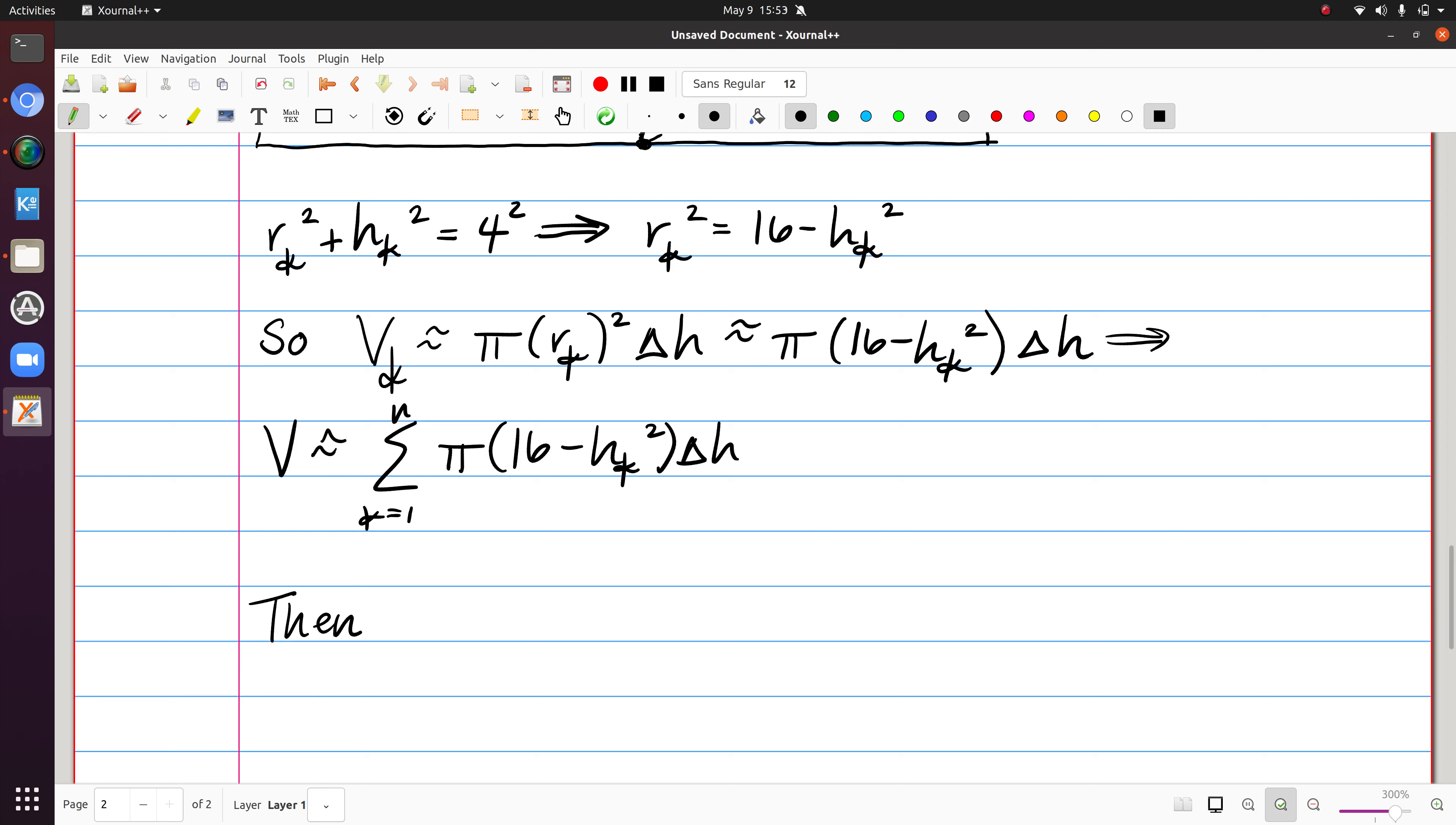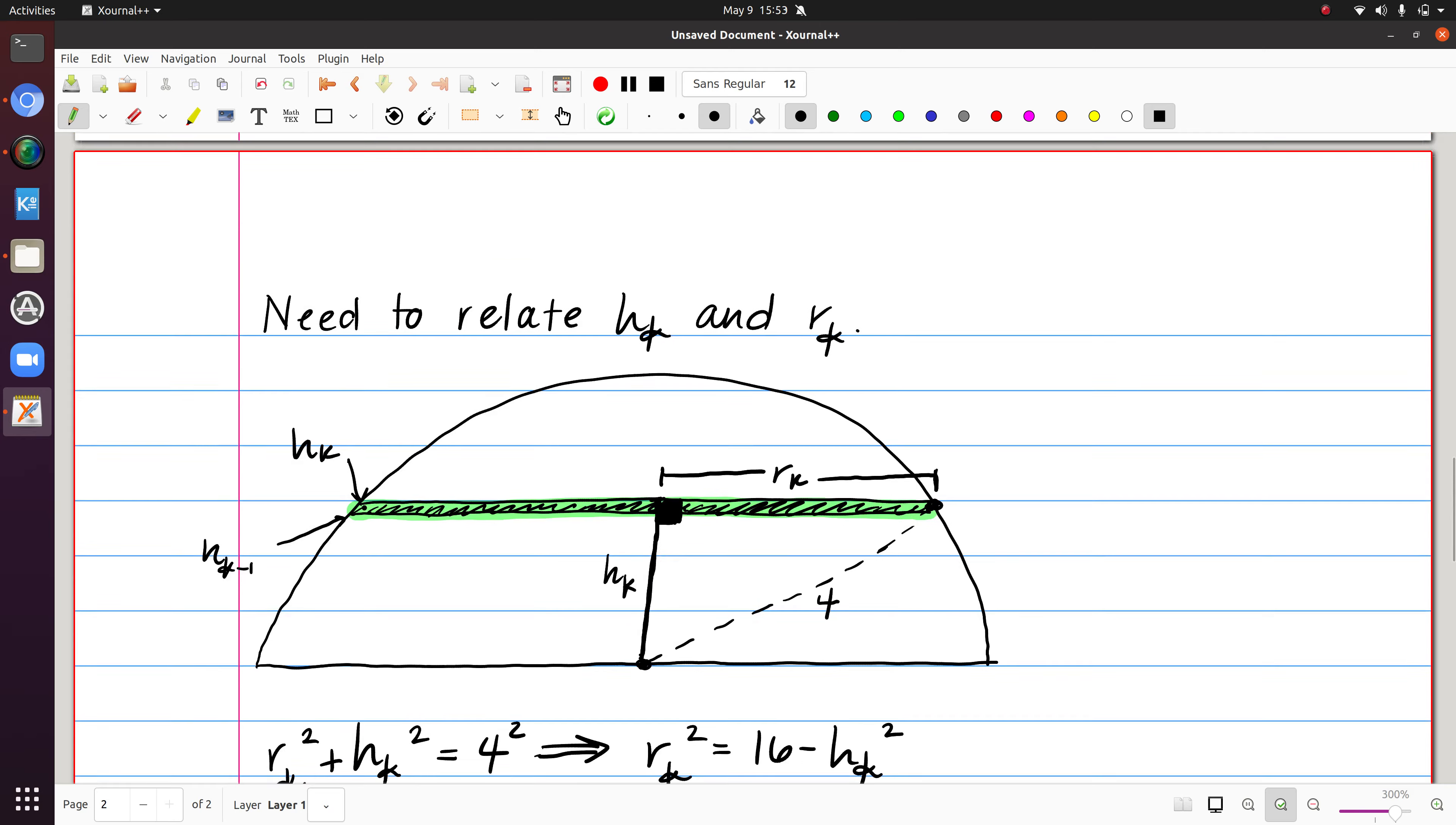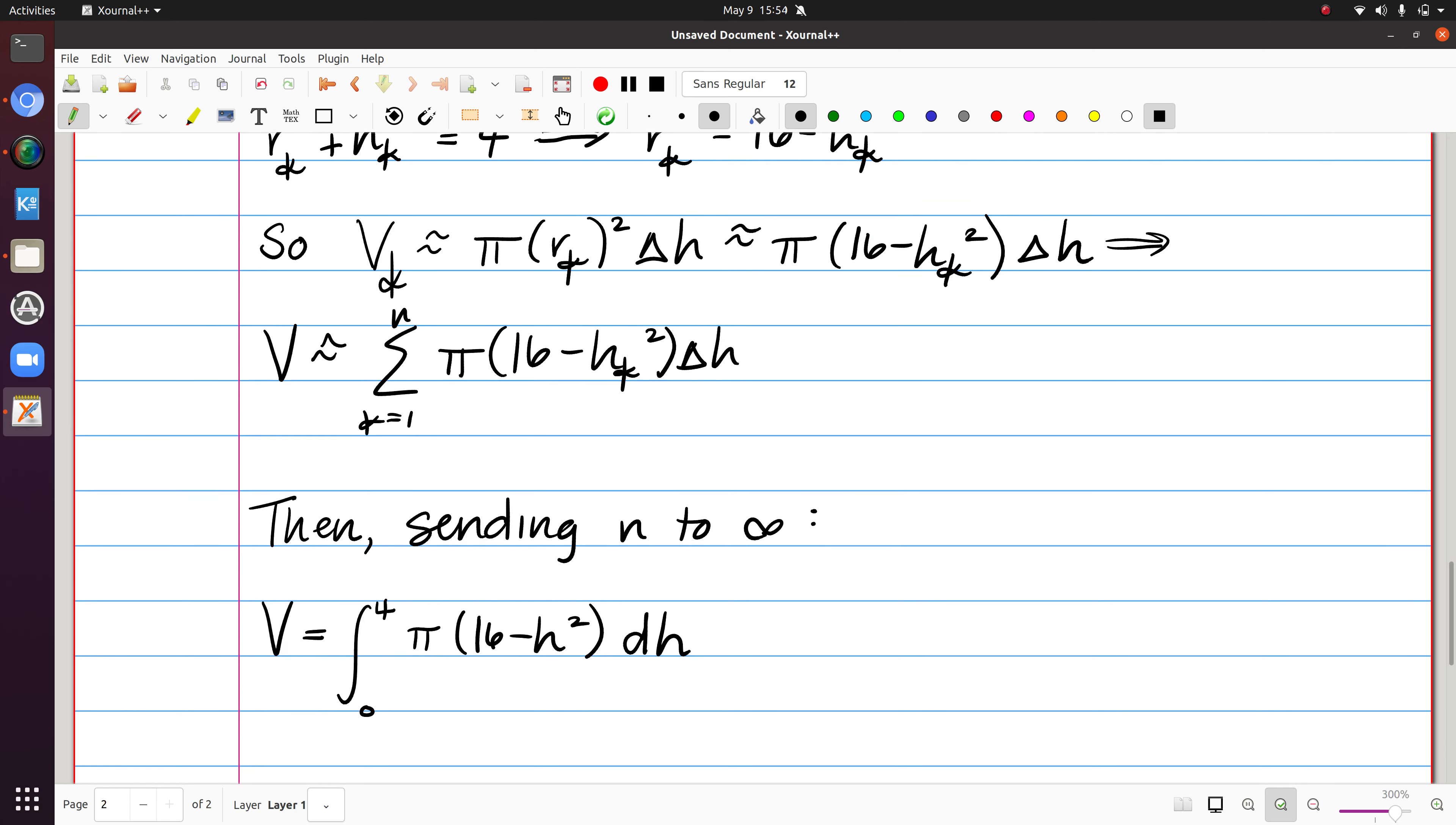So sending n to infinity, we're going to get that the volume is exactly equal to the integral of pi times the quantity 16 minus h squared delta h becomes dh. And remember, in finding the numerical bounds, I come back up to my original picture, and I think about h as really measuring how far I am off of the ground here. And if I'm on the ground, it's zero, and if I'm up at the very top, it's four, the radius of the hemisphere. So that sends me to zero to four. And at this stage, now we have enough information to compute the numerical value exactly here for the volume.